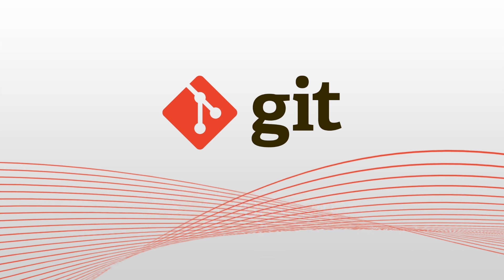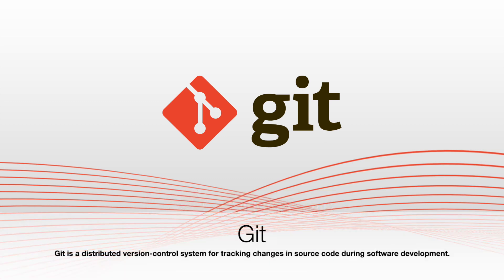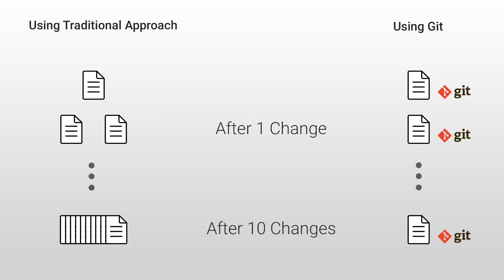So what is Git? Git is a distributed version control system for tracking changes in source code during software development. If you try to track changes in one file after 10 changes, you're going to end up with 10 versions of your file using the traditional approach. However, if you're using Git, you only have to worry about a single file and it will track the changes for you. This is just an example for one file, but a real project contains hundreds of such files.